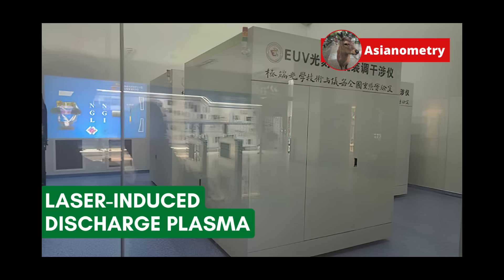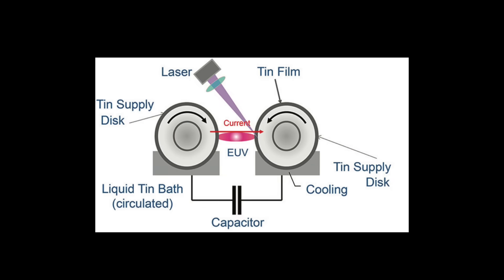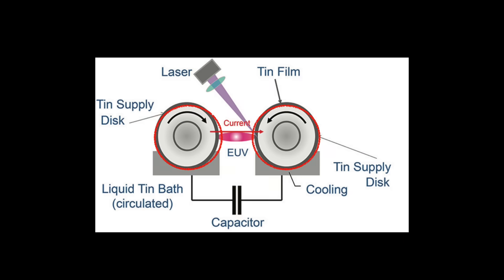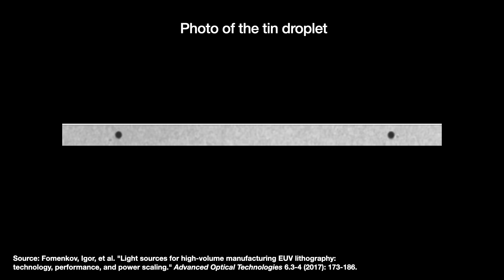Since I covered this before, what follows is a summary. LDP evolved from another system known as DPP and essentially involves spinning two wheels in a vat of molten tin and sparking it with a lightning strike. The issue with LDP is scaling the power — getting more light meant spinning the wheel even faster, but the wheel spun so fast it splattered the molten tin everywhere, and the amount of debris was insane. It's for this reason that the LPP liquid tin droplet is only 30 micrometers large — we want them as small as possible to better control them and minimize debris.